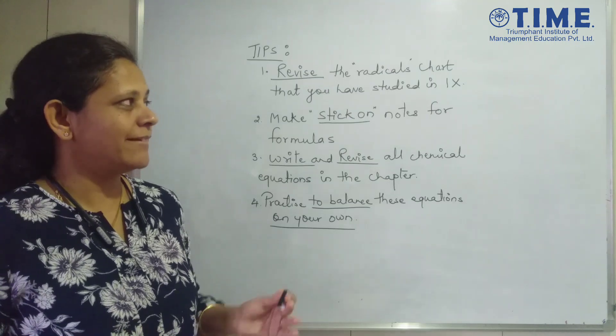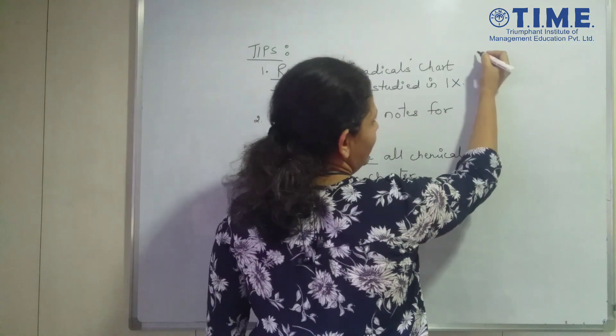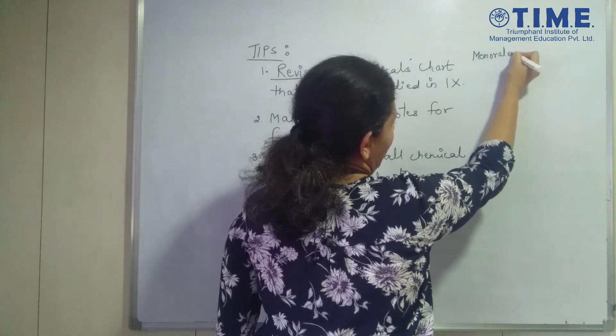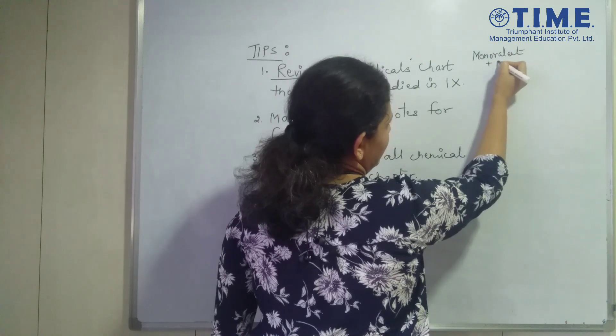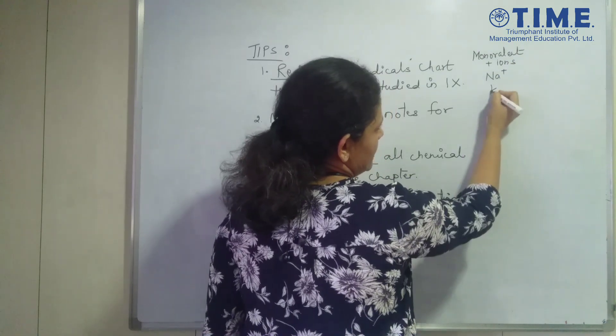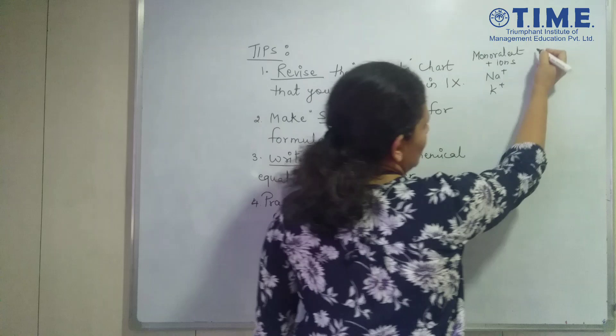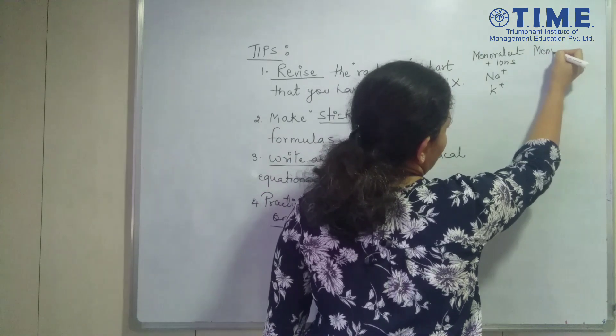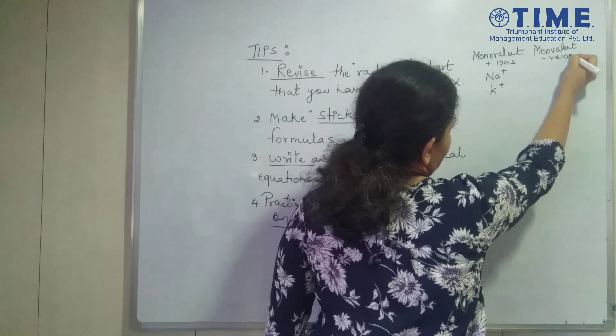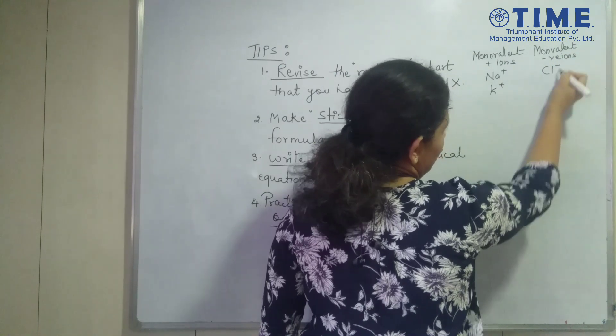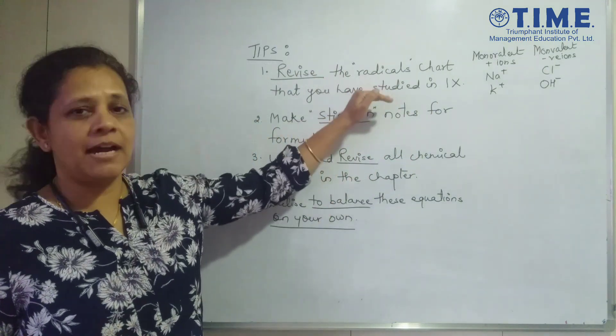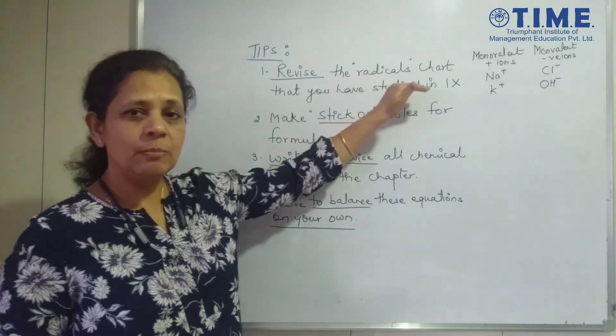I hope all of you remember the radical chart where you had some of the monovalent positive ions such as sodium, such as potassium. You had a chart where you had monovalent negative ions such as Cl minus, OH minus. So you need to revise this chart right in the beginning.